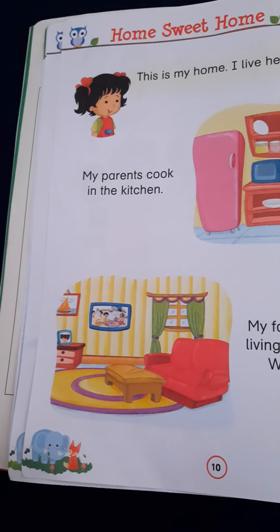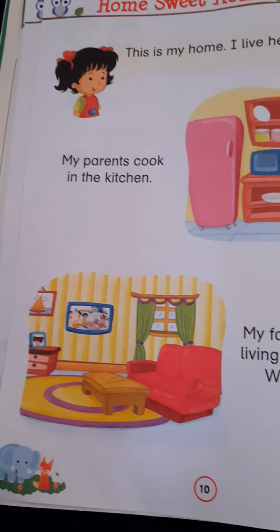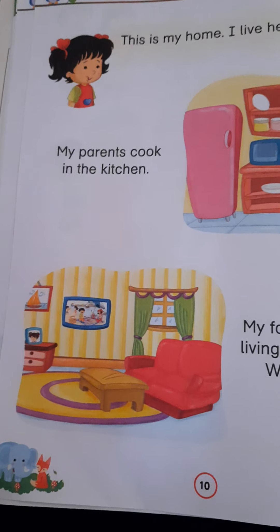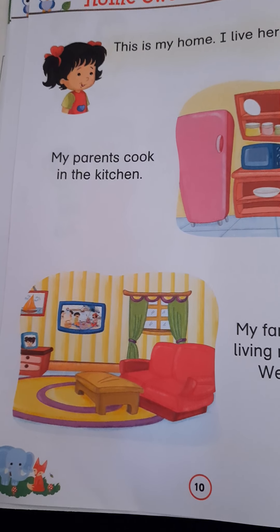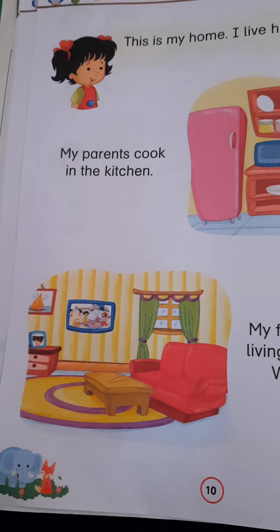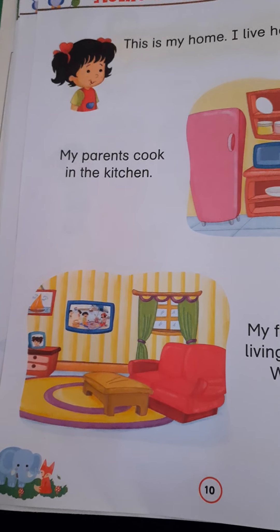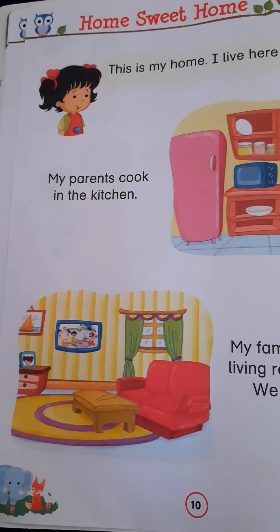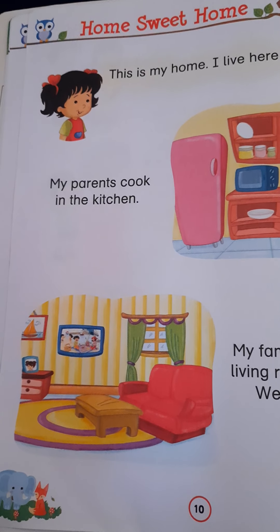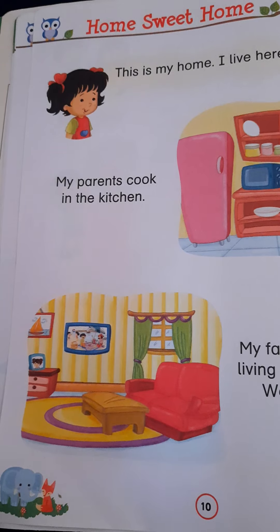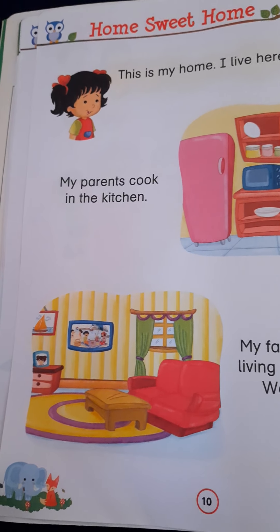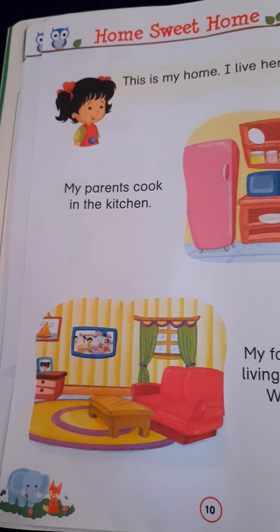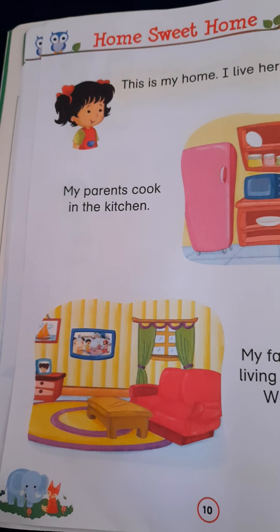Next you can see, children, this is a living room where we often sit. We also call it a hall room. If anyone comes to our house, they will first sit here and talk to us. In the living room you can see there is a window, sofa set, and a small tea table so that if guests come they are offered tea. You can also see a small drawer and photo frames.